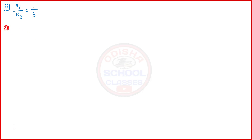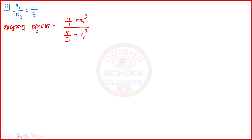Let me see: i is equal to double i. If you give it as double i, then we give R1 by R2. R2 = 1 by 3. Let's go back to A1 by A2: 4 by 3 by R1 to the Q, 4 by 3 by R2 to the Q. R1 by R2 = 1 by 3. So 1 by 3 to the Q is 1 by 27.